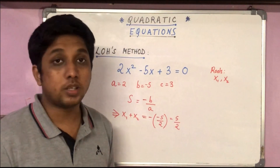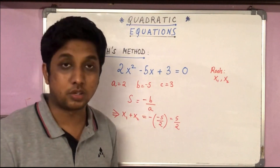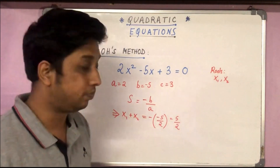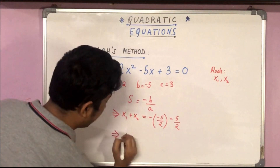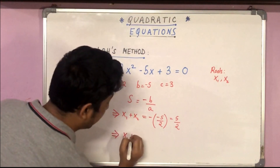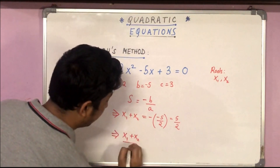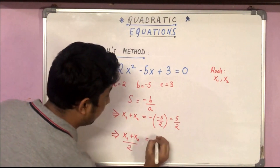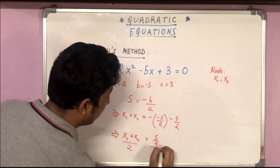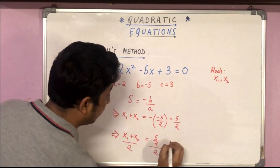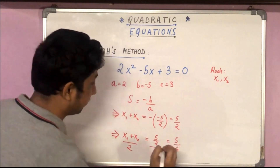Now what we need to do is divide both sides of the equation by 2. So we get (x₁ + x₂)/2 = (5/2) ÷ 2, which is nothing but 5/4.